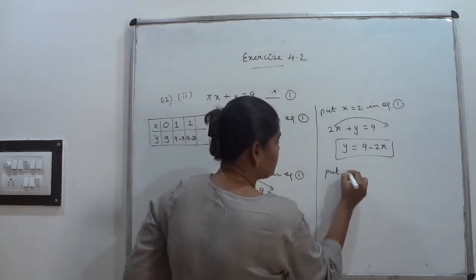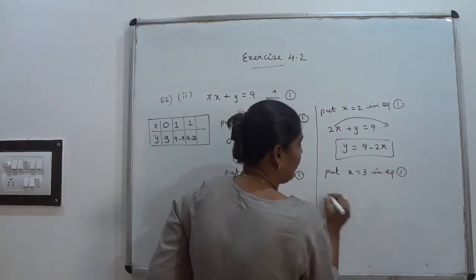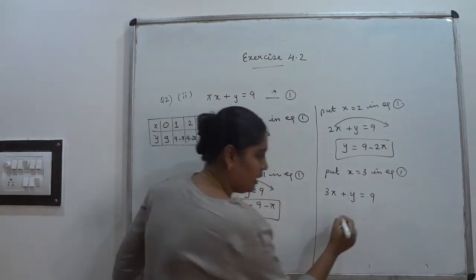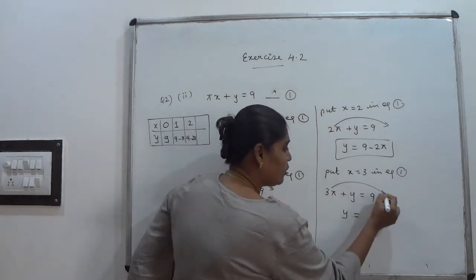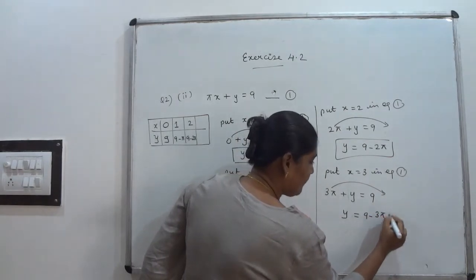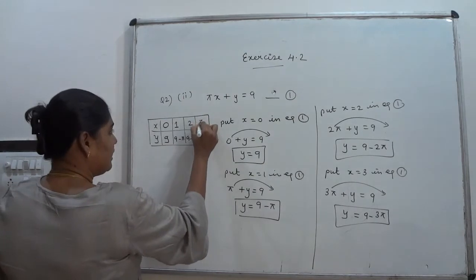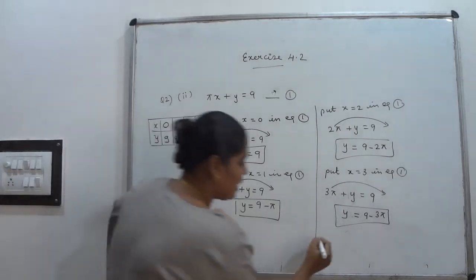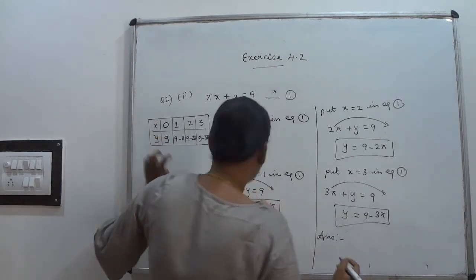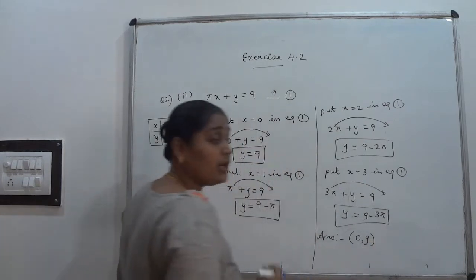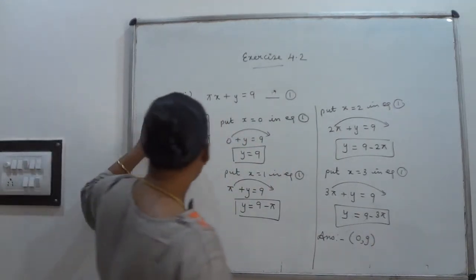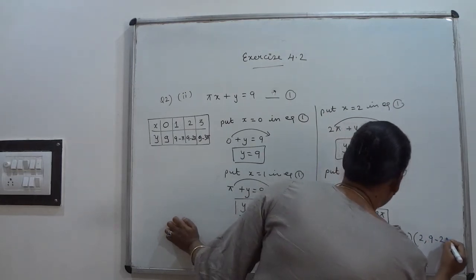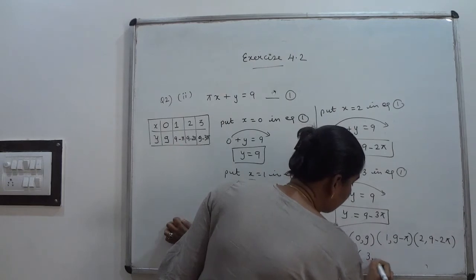Put x = 3 in equation number 1. 3 × π = 3π, so 3π + y = 9, giving y = 9 − 3π. The 4 solutions are: (0, 9), (1, 9 − π), (2, 9 − 2π), and (3, 9 − 3π).